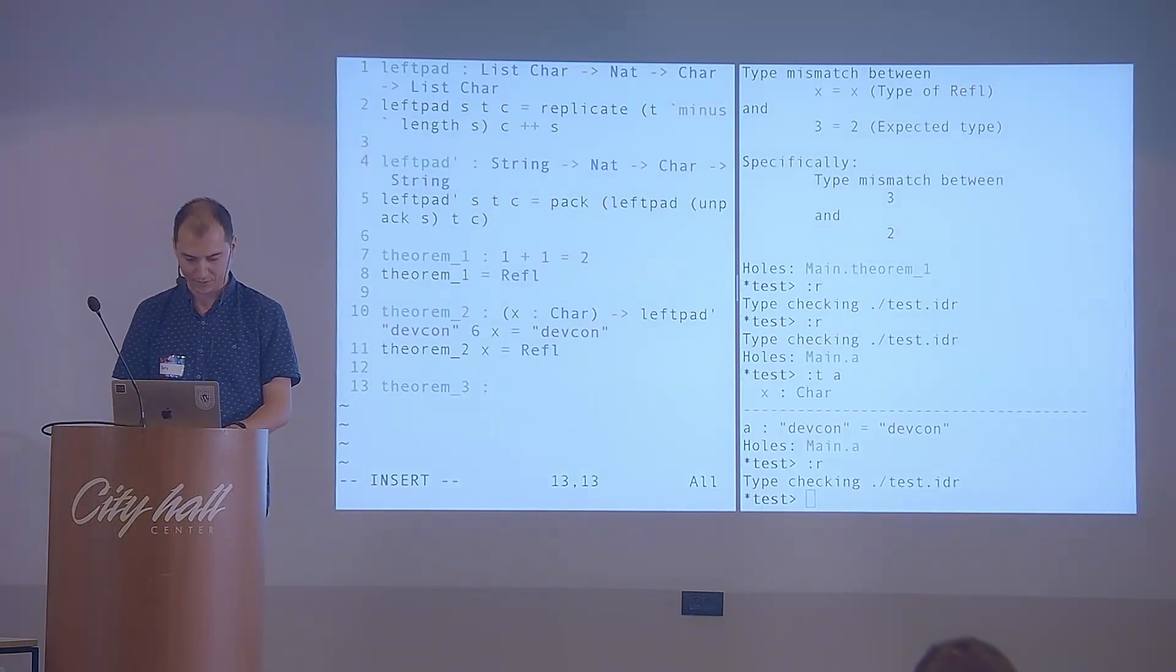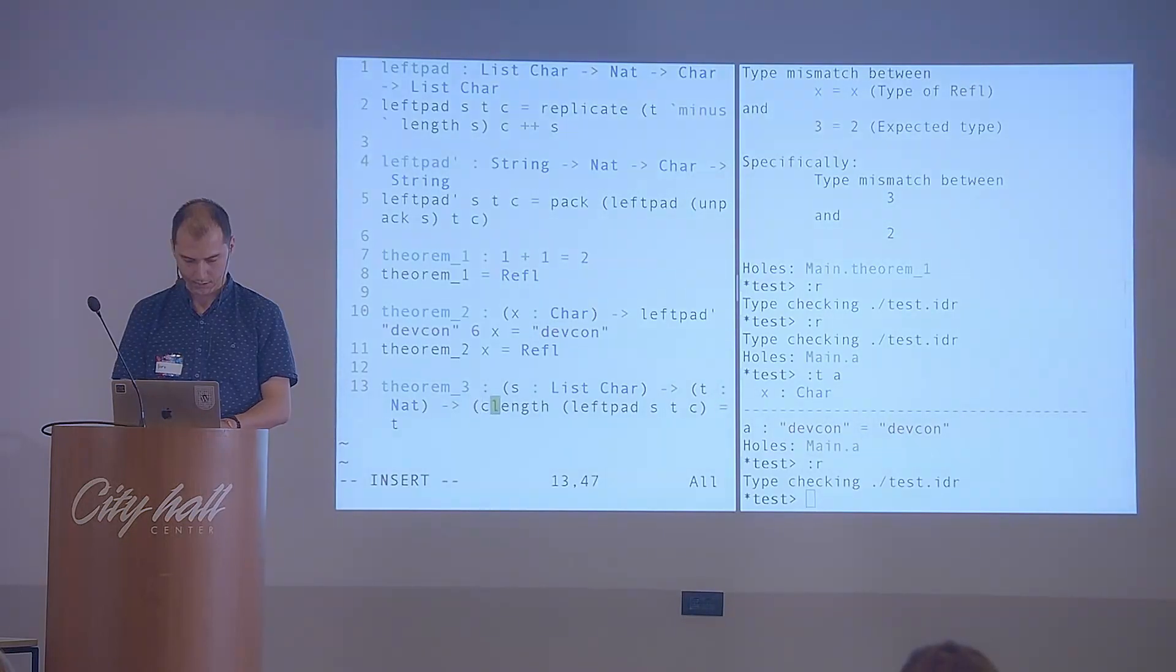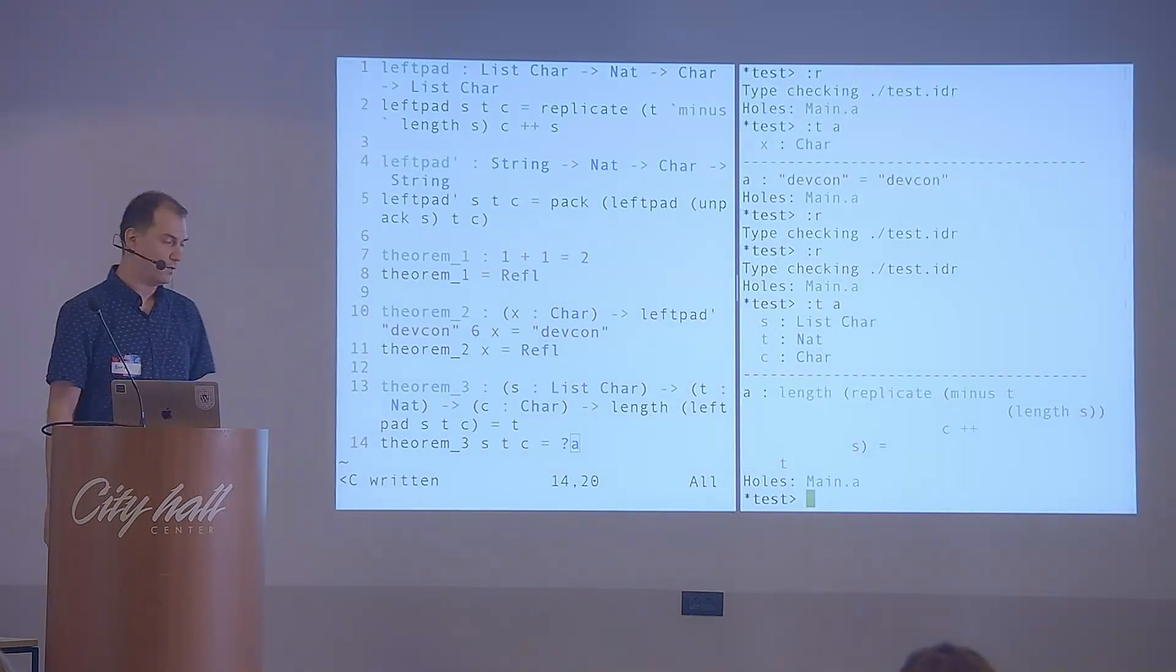We can also do some other crazy stuff. What I want to show with the next example is that not all proofs are easy obviously. This is just for demo purposes, but there are also hard parts. For example, what if you wanted to show that for any natural number, and any string, and any character, it wanted to show that the length of this guy would always be equal to T. T is the second argument of left pad, which is the final length that we are expecting. Let's see what this gives us, this hole again.